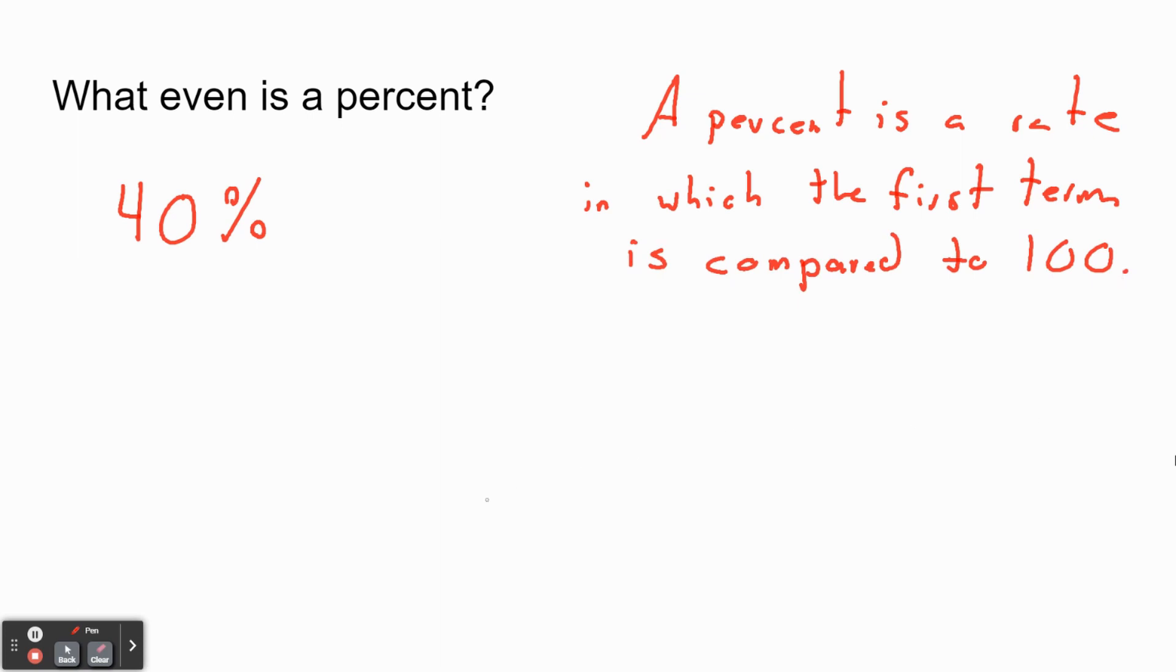Essentially what that means is whenever we write a rate, we're going to have our number on top, whatever that might be, and on the bottom we should always have 100. What that does is it makes it into an actual percent because a percent specifically compares it to 100.